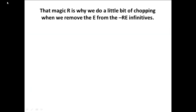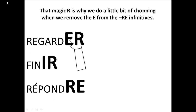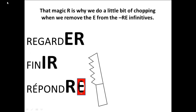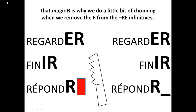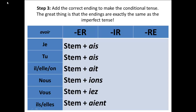Remember, that magic R is why we do a little bit of chopping when we remove the E from the RE infinitives. This is how we create the stem. With our three infinitives, chop chop chop, the E disappears, leaving us with the magic R to put our endings onto. Step 3: Add the correct ending to make the conditional tense. The great thing is that the endings are exactly the same as the imperfect tense.